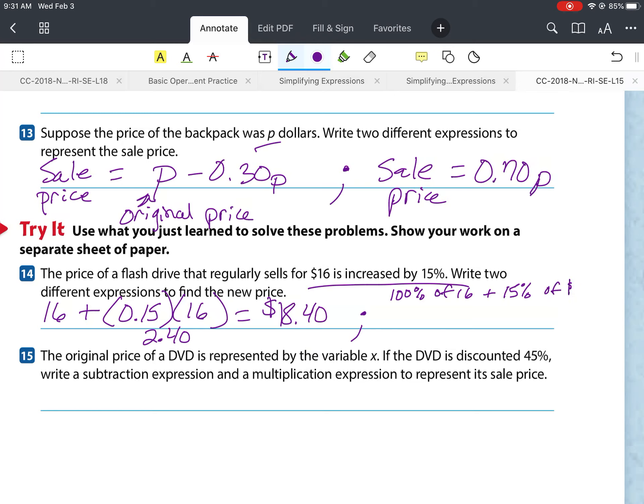Now, another way to work this out, we know that we're still going to be responsible for paying 100% of the $16, but we're going to be paying 15% more. So we've got to add to it 15% of the $16. So 100 plus 15 gives us 115% of $16. 115% expressed as a decimal is 1.15. We're going to take that and multiply it by 16. So go ahead and punch that in your calculator. 1.15 times 16. You should get $18.40. That's how much that flash drive is going to cost us.